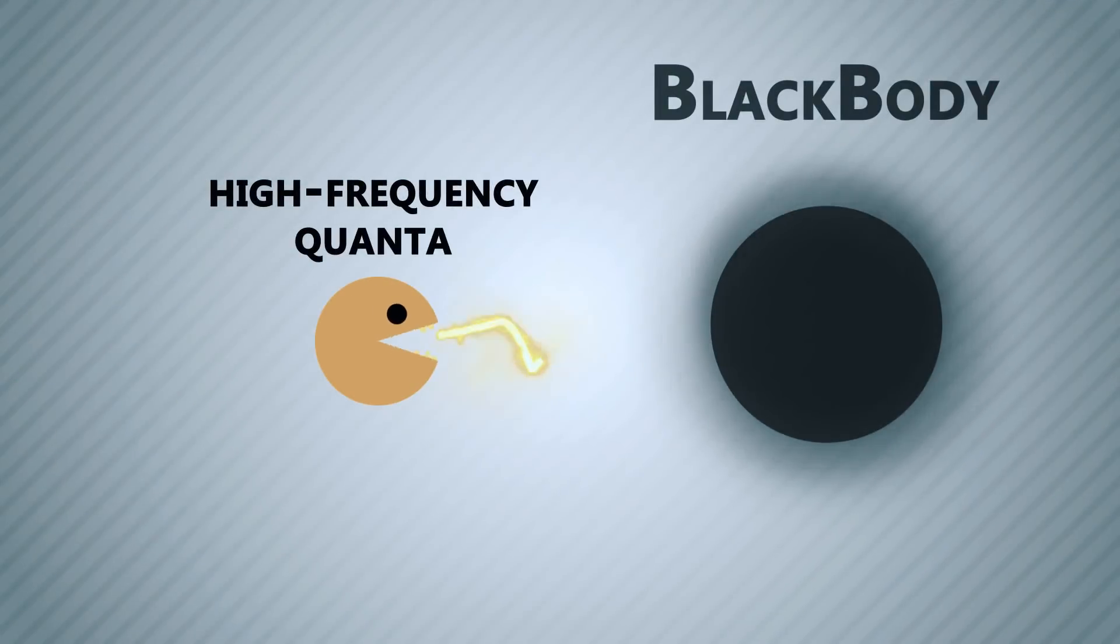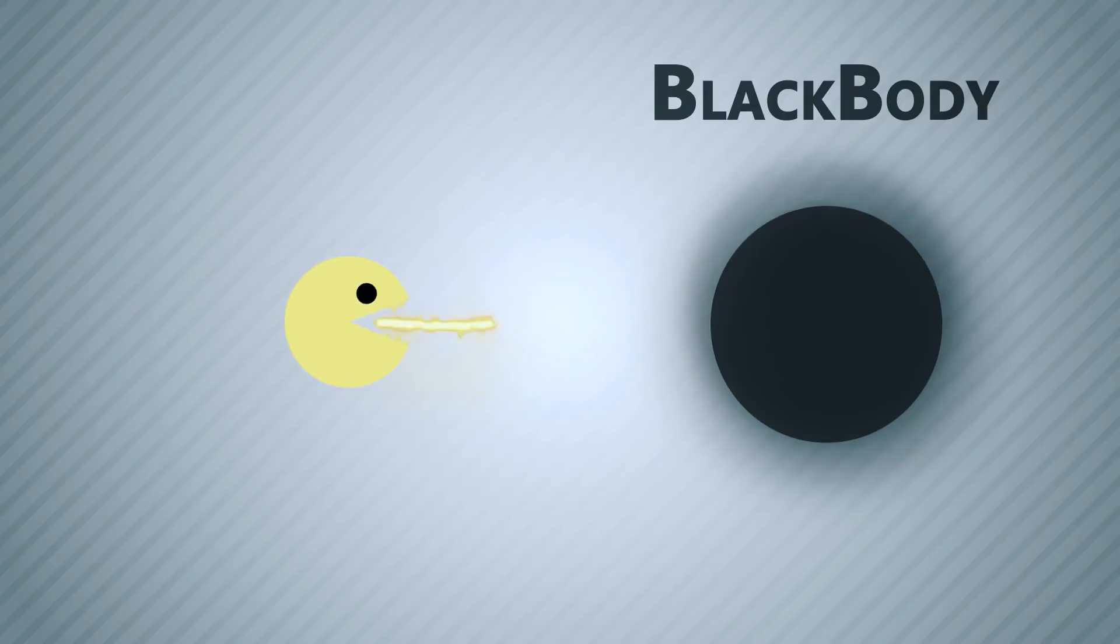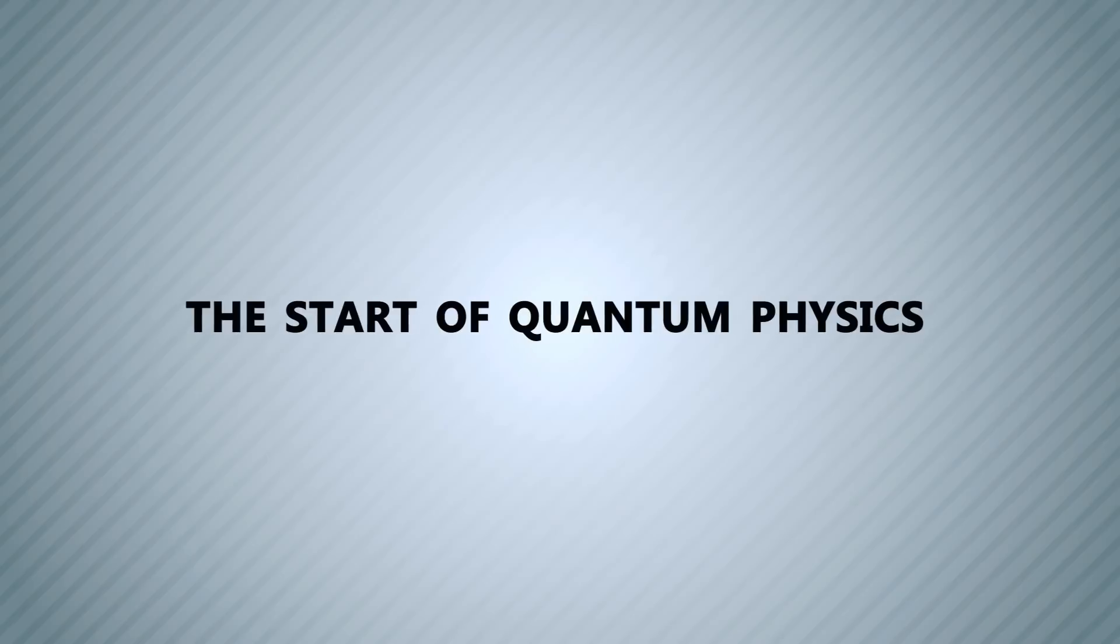Then, it was deduced that a black body wouldn't be able to fit a high-frequency quanta with enough energy. Thus, it sticks with low-energy light. Finally, this became a fundamental basis for the start of quantum physics.